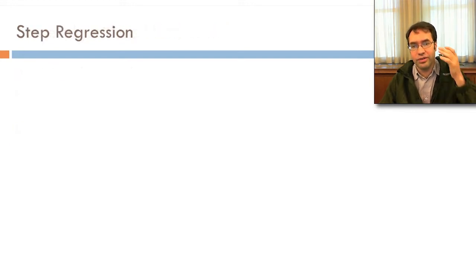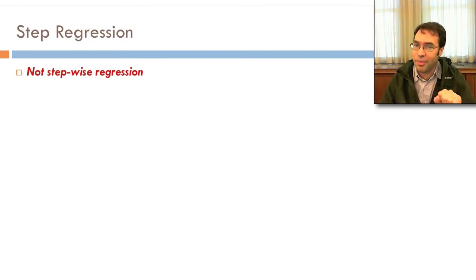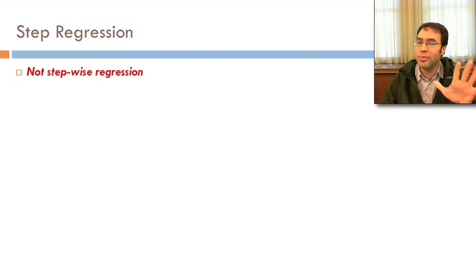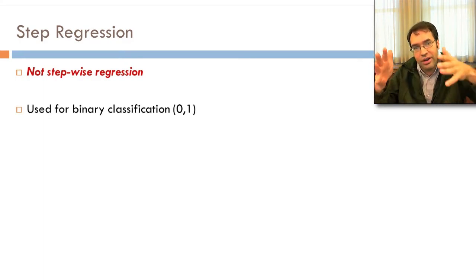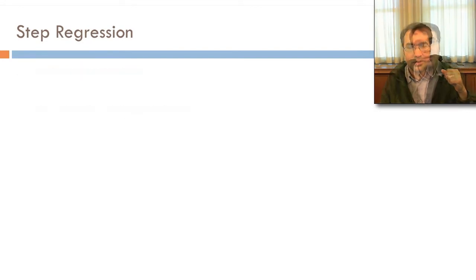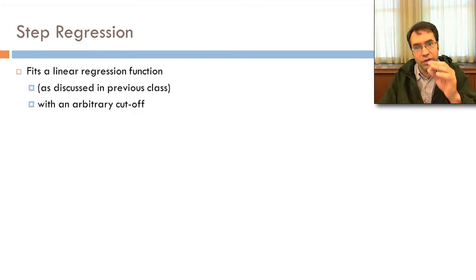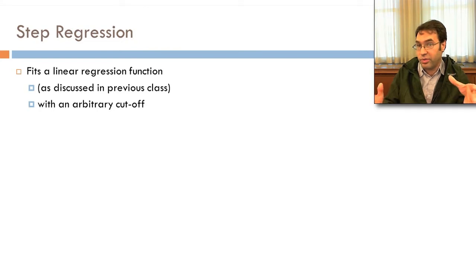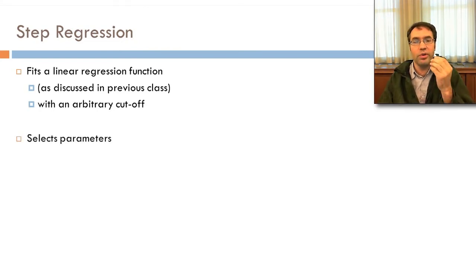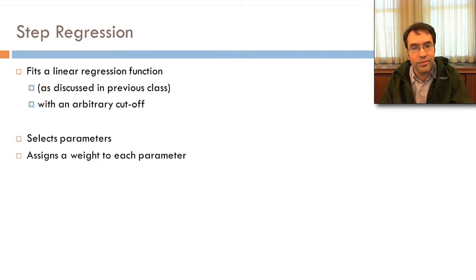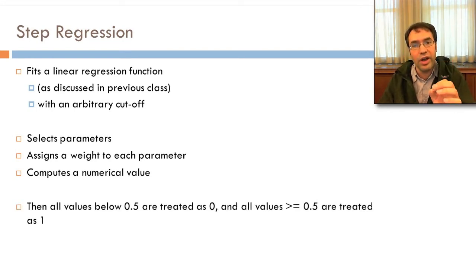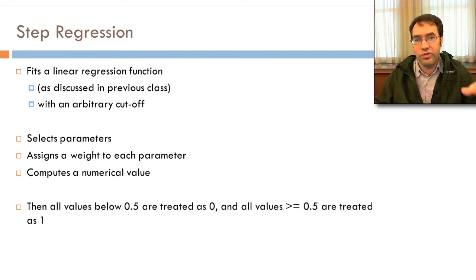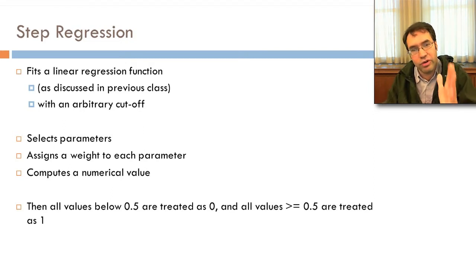Let's start with step regression. First thing: step regression is not stepwise regression — they have similar names but they're not the same thing. Step regression is used for binary classification (0 or 1 — will the student drop out or not?). We fit a linear regression function with an arbitrary cutoff. We select variables (also called parameters), assign a weight to each, compute a numerical value by adding them all together, then treat all values below 0.5 as 0 and all values greater than or equal to 0.5 as 1.